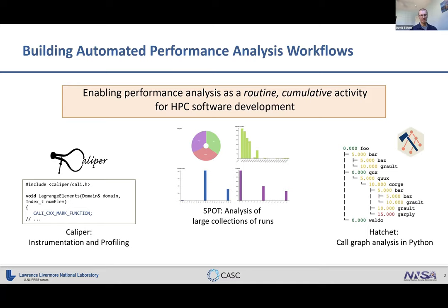There are many performance analysis tools already out there, like TAU, HPCToolkit, Scorpio, and so on. These are what I would consider performance debugging tools — you can use them to analyze a single program run in depth to find performance bottlenecks. As a result, these tools are used more retroactively and rather infrequently, if you already suspect a performance issue.